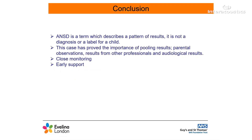ANSD is a term which describes a pattern of results. It is not a diagnosis or a label for a child. This case has proved the importance of pooling results, parental observations, results from other professionals such as neurology, and audiological test results. This case has also highlighted the importance of the follow-up ABR at eight to ten weeks corrected age, because sometimes, as is in this case, the ABR responses do show maturation, and it is important to leave the space of time to allow for that possibility. Adopting a cautious approach when it gets to diagnosis and management, rather than rushing into an assumption. Early support for families of children diagnosed with any hearing loss is vital. ANSD can be very confusing, scary, and overwhelming for families, and thus early support, such as a referral to the teacher of the deaf, is important.